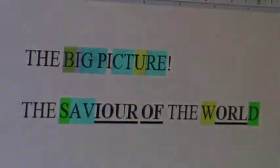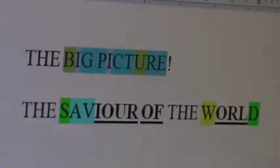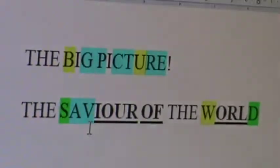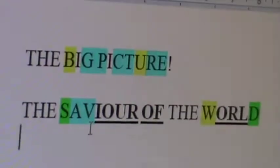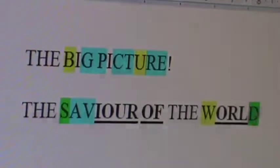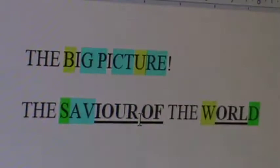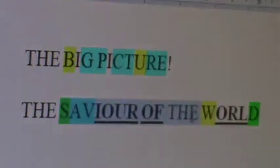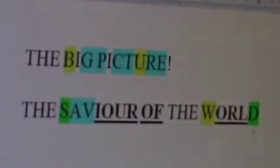In a previous video we found all the I Ams in the big picture, but here it is in the Savior of the World. I Am number one, I Am number two, I Am number three — and then everything else is pure three. There's your three I Ams, which equals Jehovah.